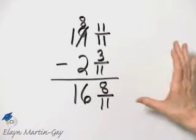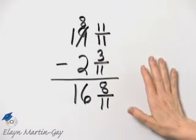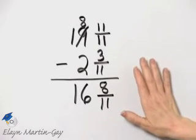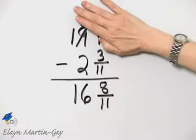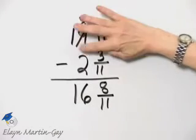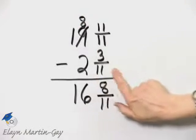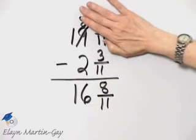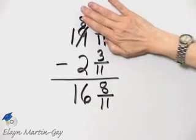By the way, don't forget especially when working with mixed numbers to try and estimate some sort of appropriate answer. We started with 19, we were subtracting something closer to 2 than 3 and 19 minus 2 is 17.